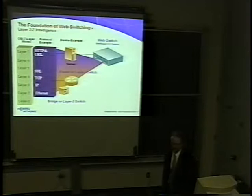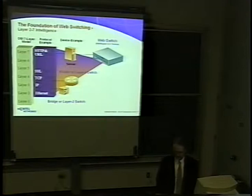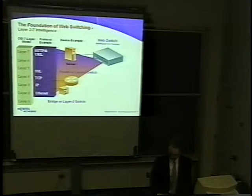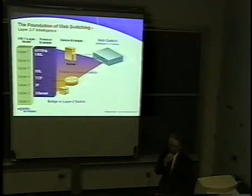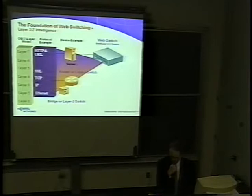Let's review the functionality a web switch provides compared to other network devices. The OSI 7-layer model is on the left with associated protocols alongside. The mission of the web switch is to process traffic at all layers, but it's more optimized for layers 4 through 7. A web switch can work in conjunction with a layer 2/3 switch, a router, or a broadband service node, and typically sits in large data centers or an ISP's point of presence.